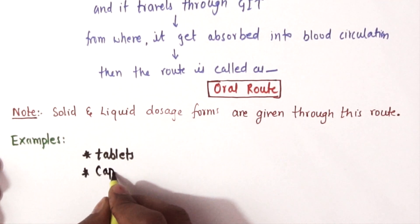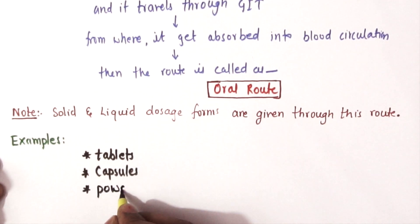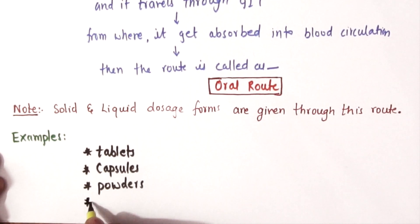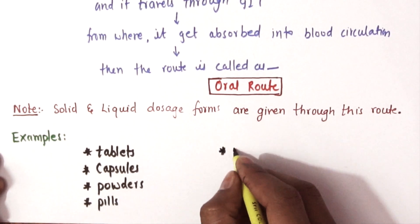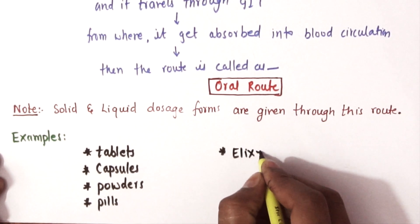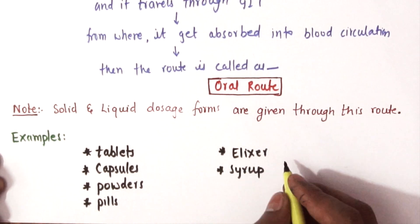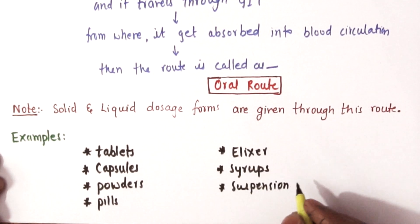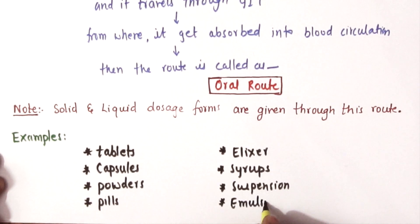Note that solid and liquid dosage forms are given through the oral route. Examples include tablets, capsules, powders, pills, elixirs, syrups, suspensions, emulsions, and so on.